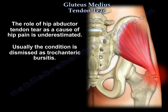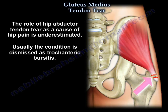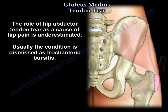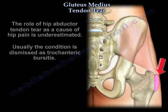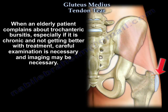The role of hip abductor tendon tear as a cause of hip pain is underestimated, and usually the condition is dismissed as trochanteric bursitis. When an elderly patient complains about trochanteric bursitis, especially if it is chronic and not getting better with treatment, careful exam is necessary, and probably imaging is also necessary.